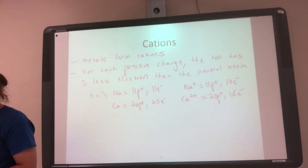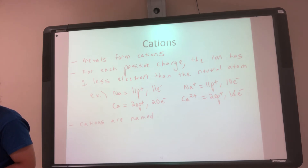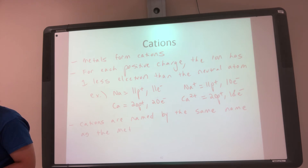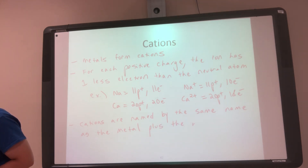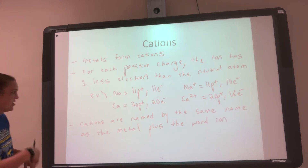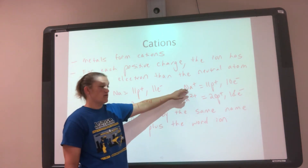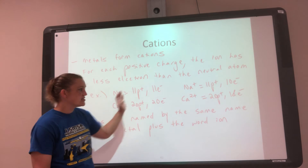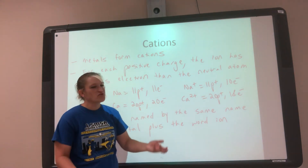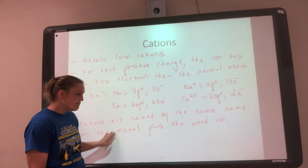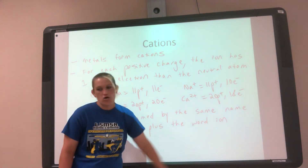Cations are named by the same name as the metal plus the word 'ion.' So sodium becomes sodium ion, and calcium becomes calcium ion. It's much simpler than anion naming — just the metal name and then the word ion, that's it.